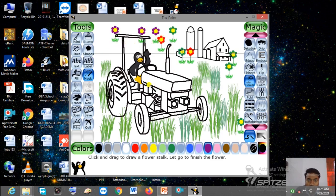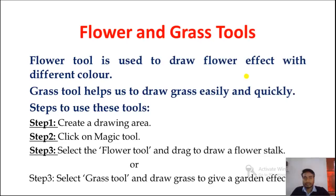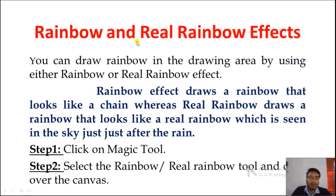This is the use of the Grass tool and Flower tool. Next we have the Rainbow and Real Rainbow effects. You can draw a rainbow in the draw area by using either the Rainbow or Real Rainbow tool.